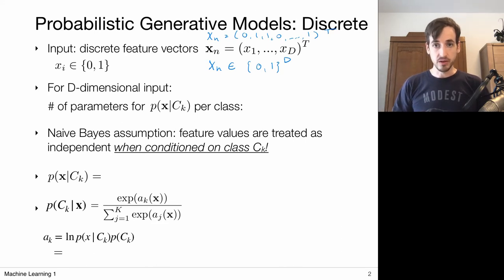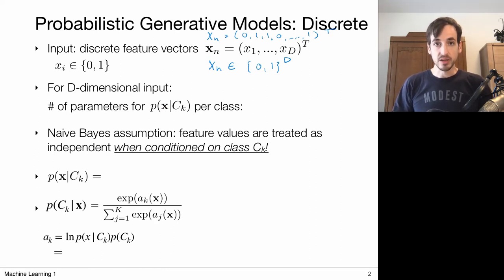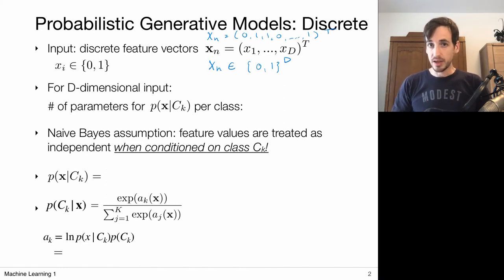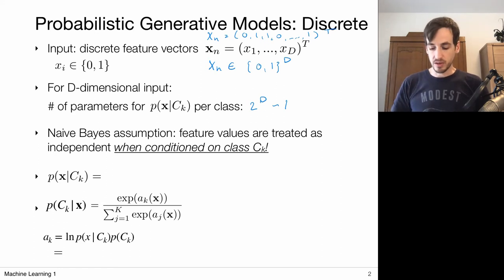Now my data is no longer continuous. What we want to do is come up with conditional models — given a class, we want to assign probabilities to each possible vector x. But since my data points are no longer continuous, I have to assign a probability for each possible vector I can encounter, meaning I'm going to need a lot of parameters. For binary vectors of dimension d, I would need 2^d parameters, or actually 2^d minus 1, because these probabilities are normalized — they must sum to 1, so the last parameter is determined by the rest.